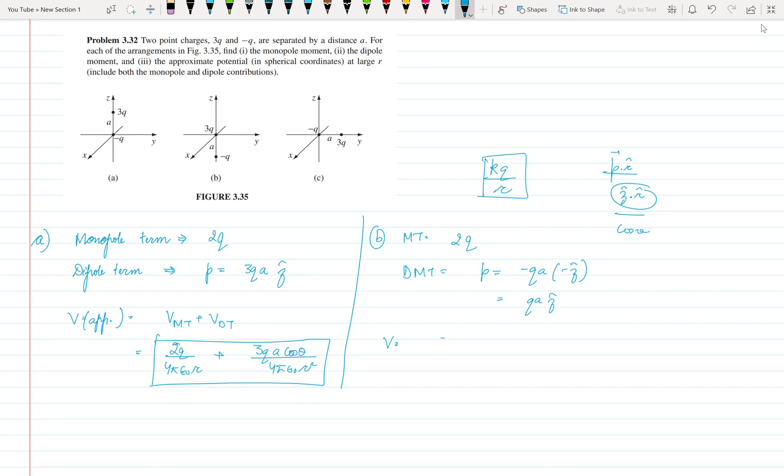So the approximate potential formula is 2Q upon 4 pi epsilon naught R plus QA cos theta upon 4 pi epsilon naught R square. So now coming to part C.